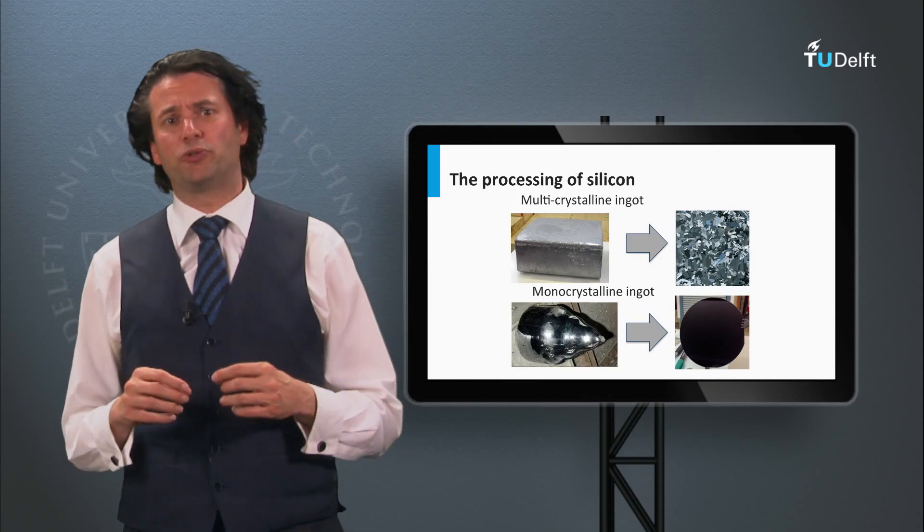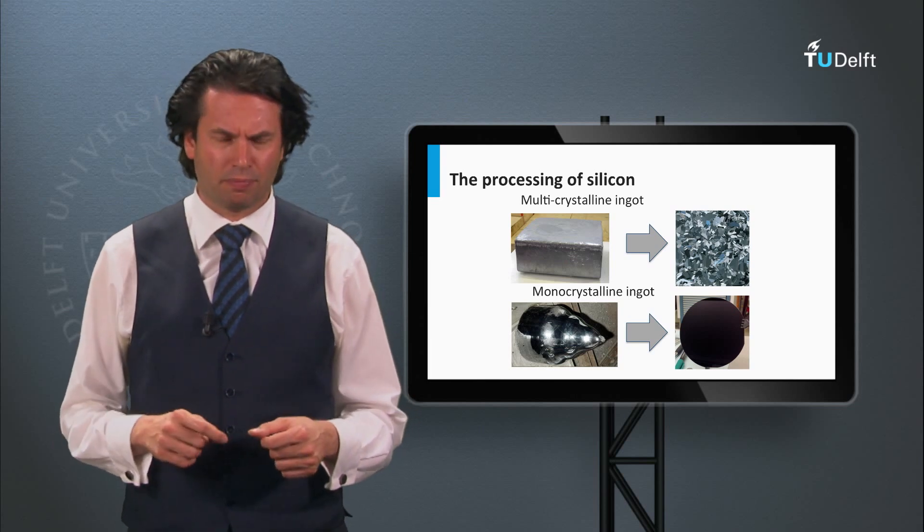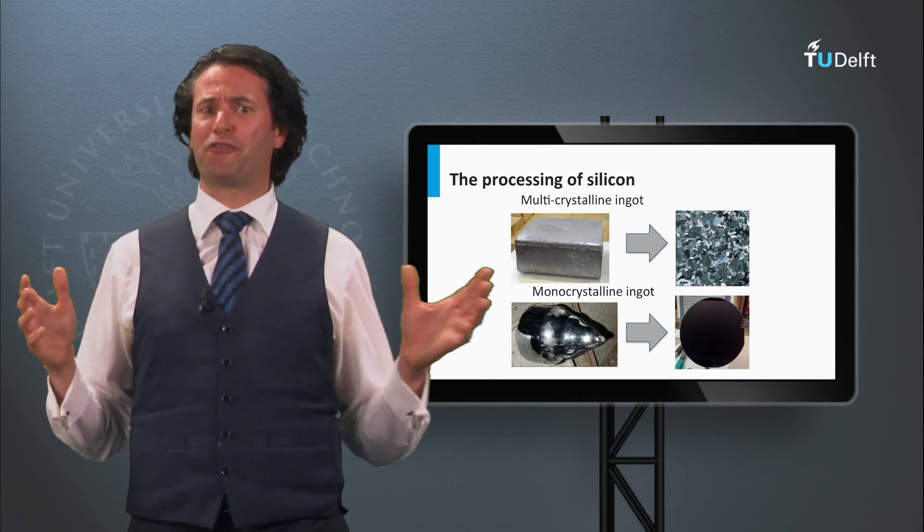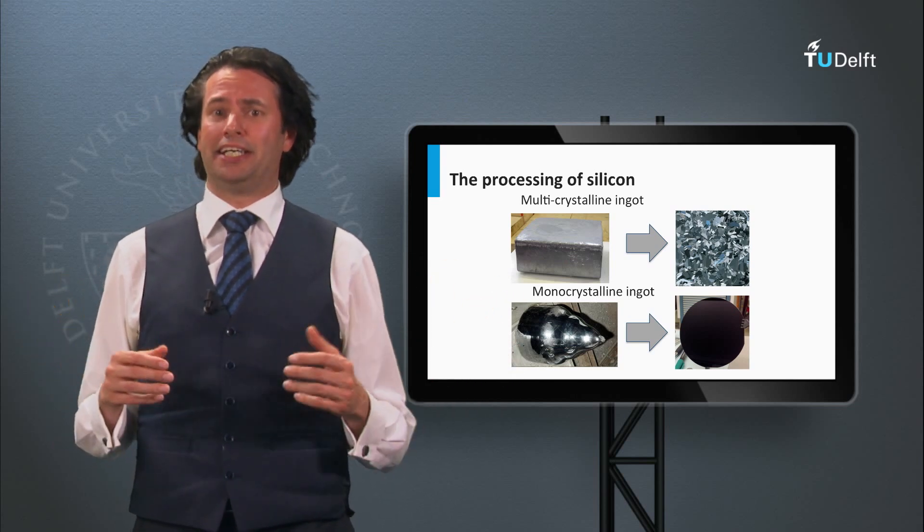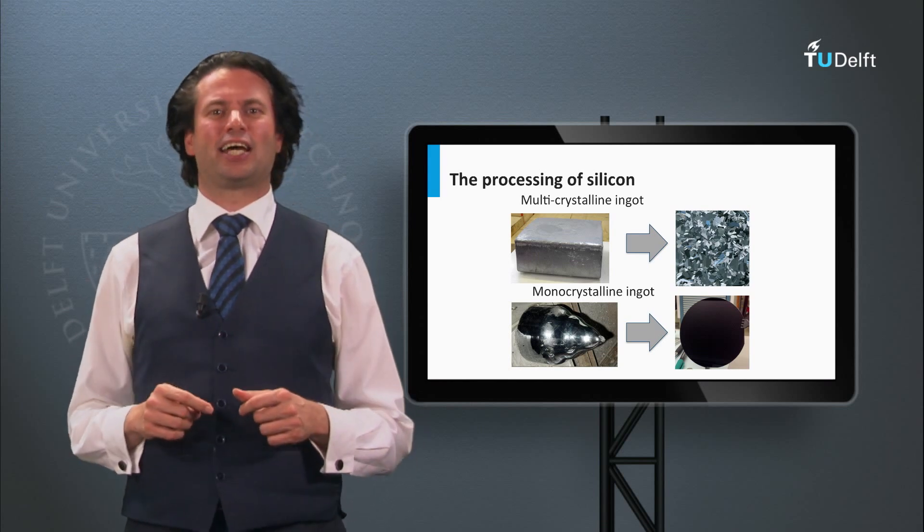Now we know how to produce monocrystalline and multicrystalline ingots. How do we make wafers out of them? The answer is sawing, as you can see in the next animation.